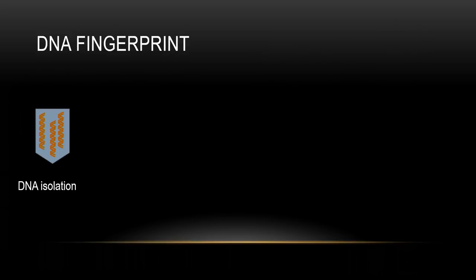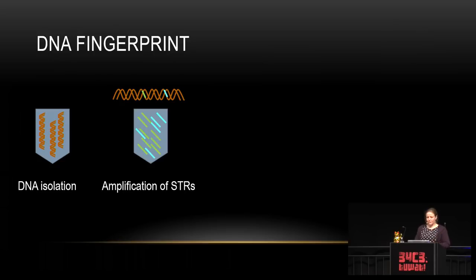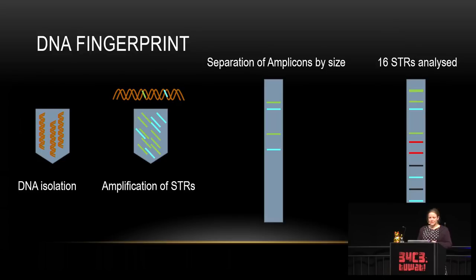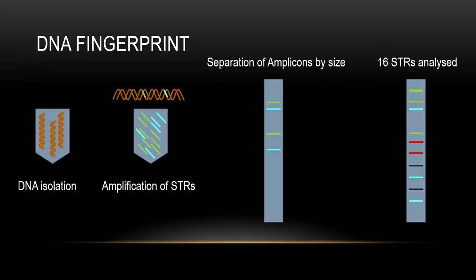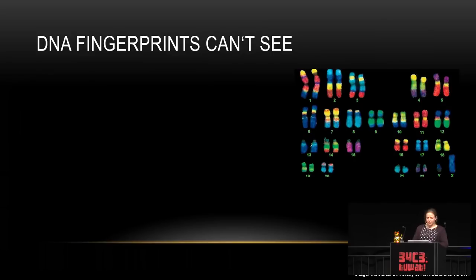To get a DNA fingerprint, you first isolate the DNA from a crime scene or probe, amplify the STRs, and separate them by size — because different numbers of repeats generate different sizes of the amplified sequence. You do this for 16 STRs and get a profile, which you might have seen in TV series. DNA fingerprints don't really show how you look like, as they are outside of genes.